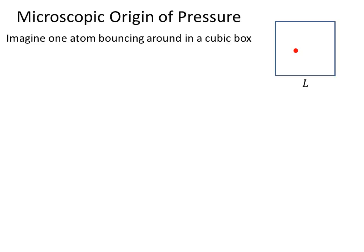In this lecture, we're looking at the microscopic origin of pressure. Imagine one atom bouncing around in a cubic box. The side of the box is a length L. How much force does a collision of the atom with the wall exert on the wall?